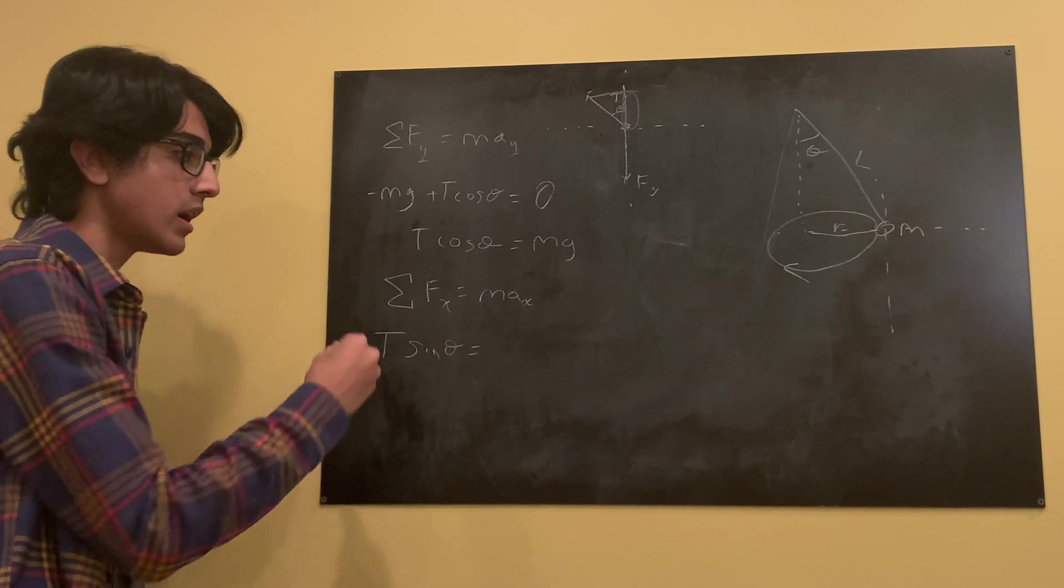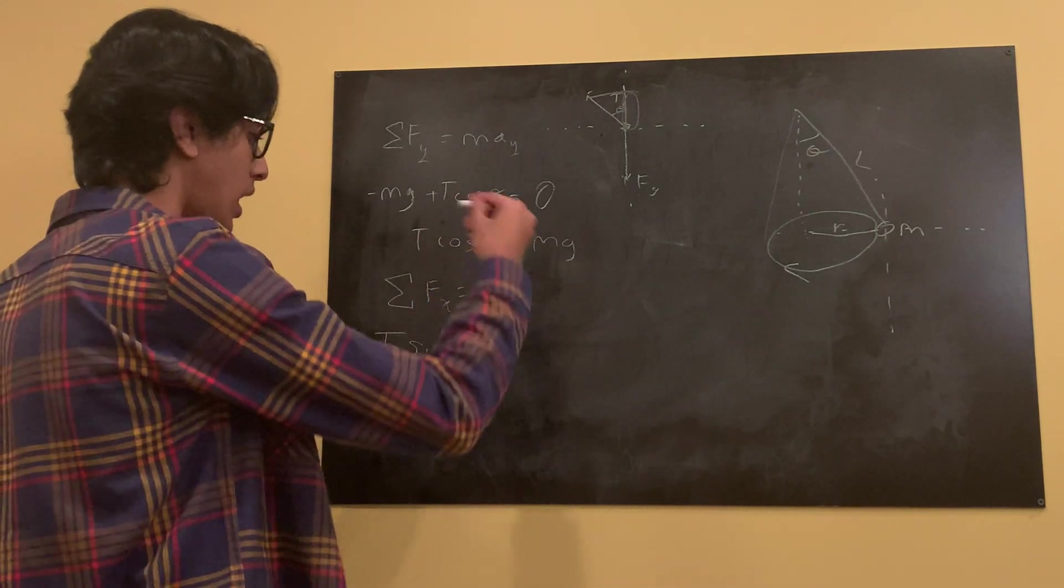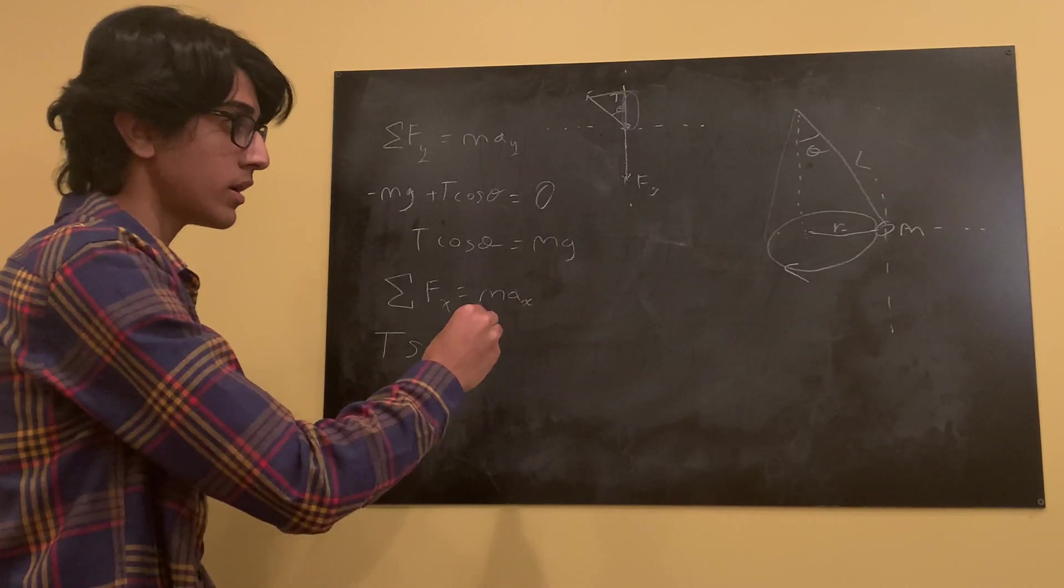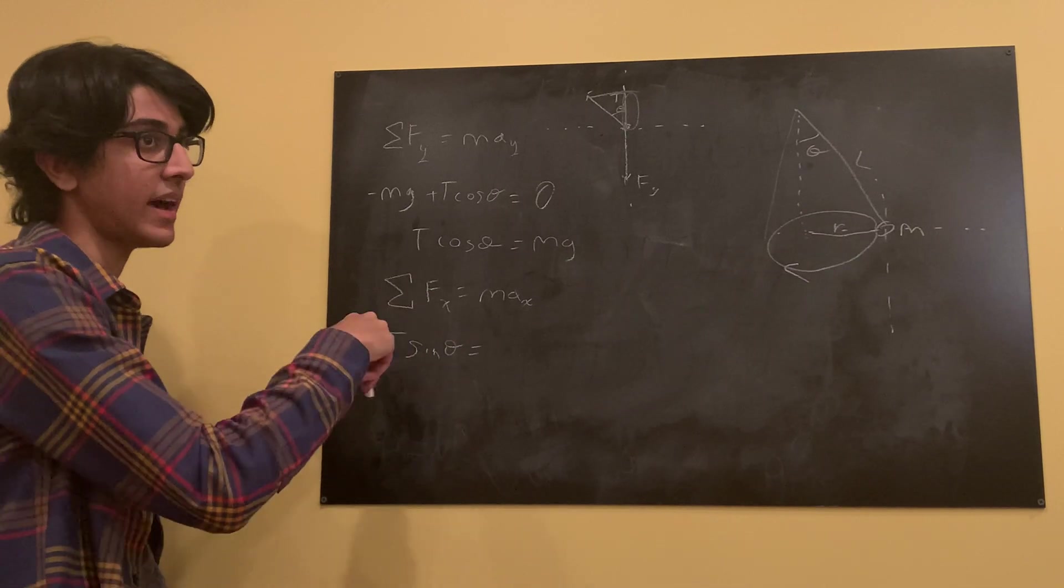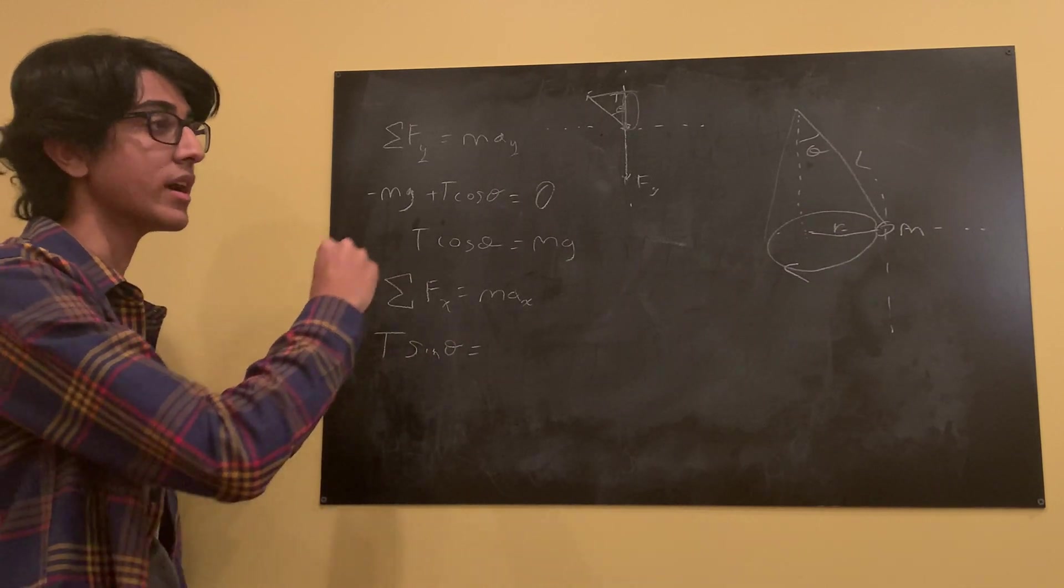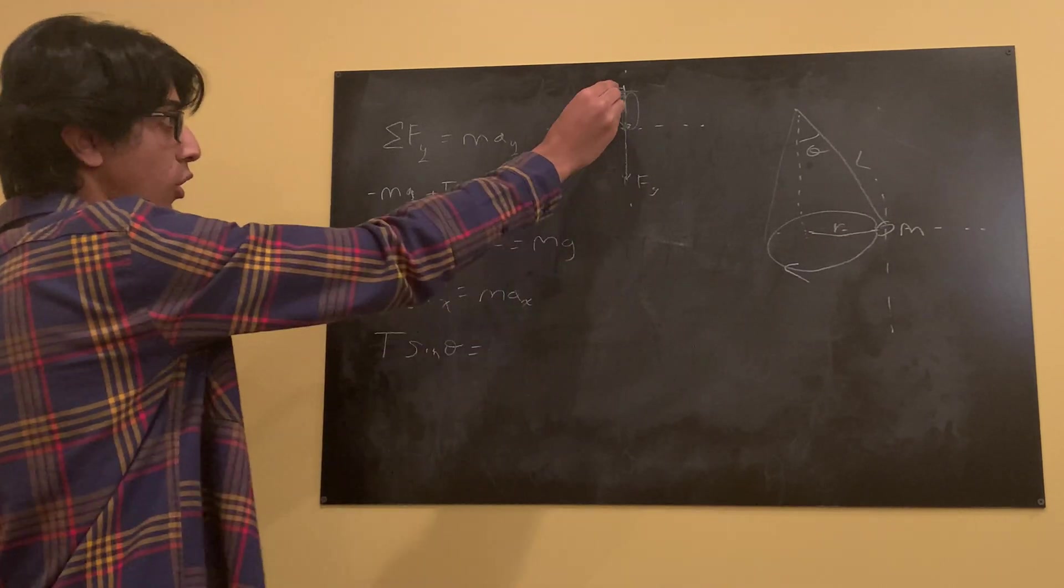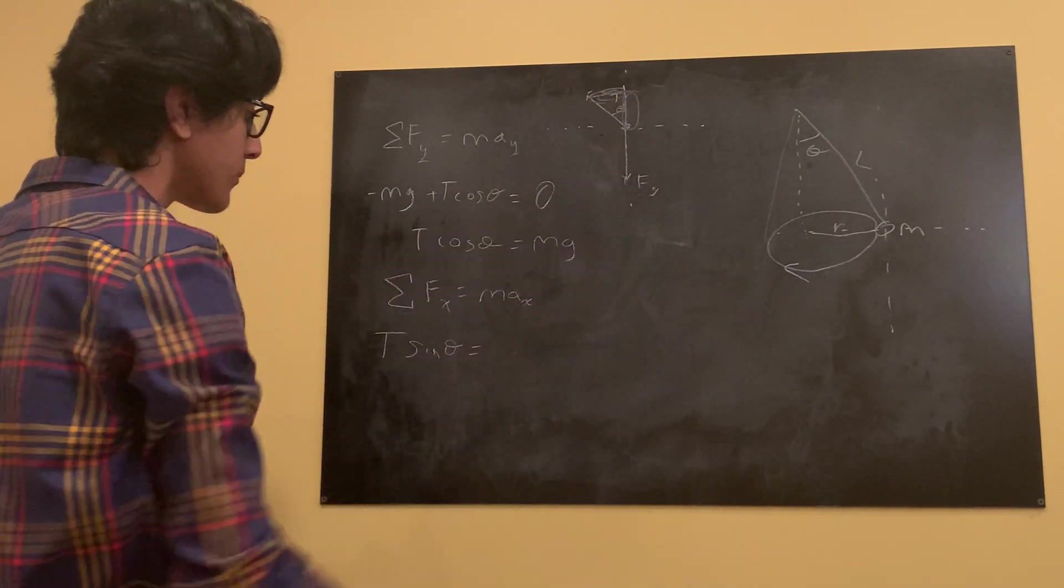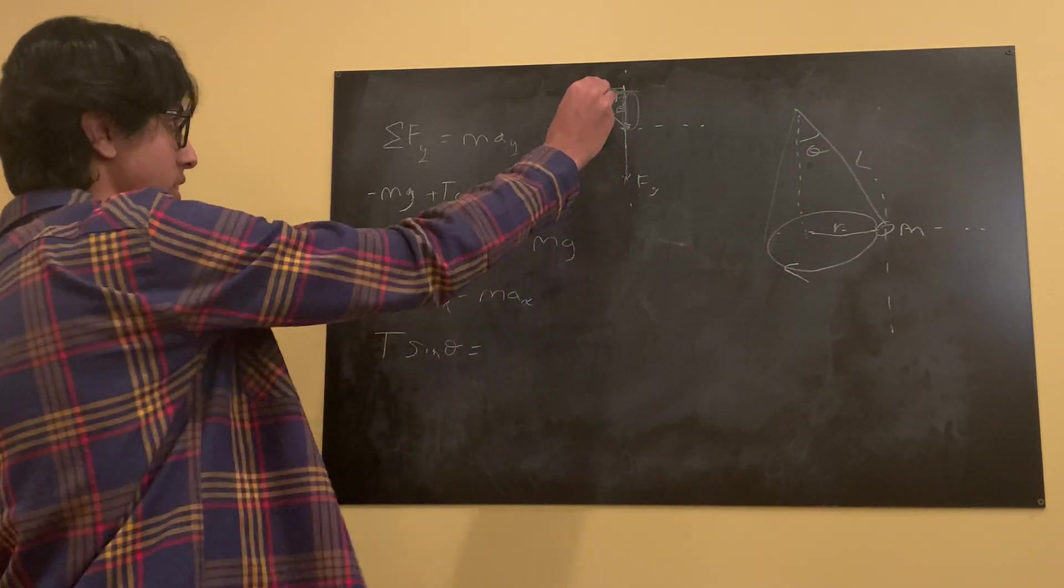So sine is, we're solving for opposite, right? So sine is opposite over hypotenuse. Hypotenuse is t. We multiply that t, that hypotenuse over. So the opposite, which is this side that we want, right? That's the horizontal component of this, is t sine theta. That's what this side is.